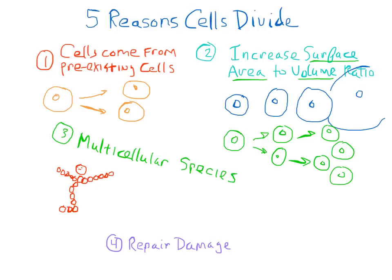The fourth reason is that cell division enables a creature to repair damaged tissue. For instance, if you cut your finger with a sharp knife, such as shown in this diagram, cell division can add new cells to the injured area and repair the cut.